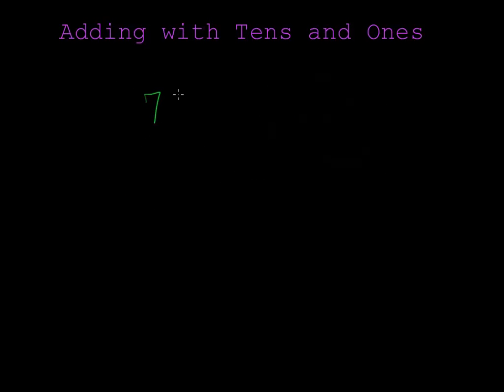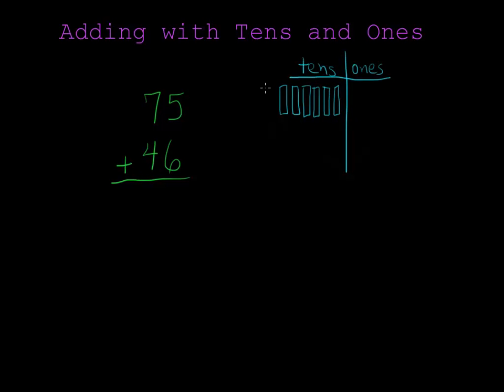Okay, let's try one more problem. This time with slightly larger numbers: 75 plus 46. And again, the first thing that we do is to draw this picture with tens and ones. 75 has 7 tens and 5 ones. 46 has 4 tens and 6 ones.